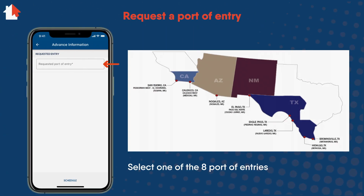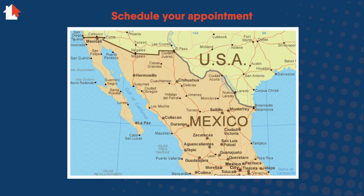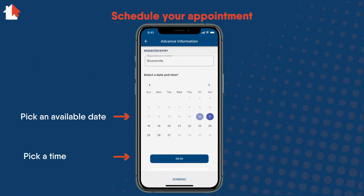Next, you will need to request a port of entry. You must travel to one of the cities listed for your appointment. You can choose one of the eight ports of entry in the listed Mexican cities. After inputting the city, select Schedule. If you are in northern Mexico, Ciudad de Mexico, or near the U.S.-Mexico border, you can schedule your appointment now. It is important while you are in Mexico to follow their laws.